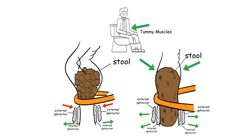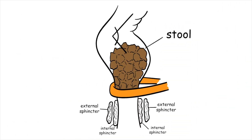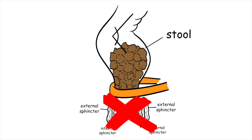Difficulty passing a bowel motion can be due to problems at any step along this process, usually from poor coordination between the muscles and nerves around the back passage. When certain things go wrong with this process, it can create difficulties passing stool, known as obstructive defecation.